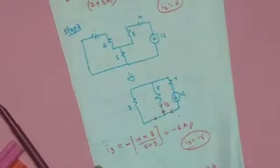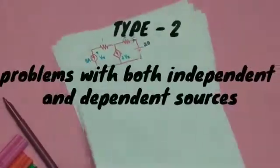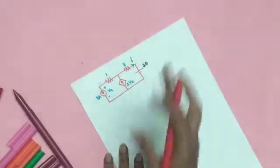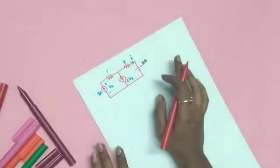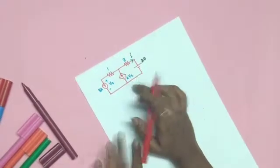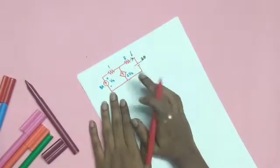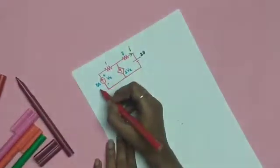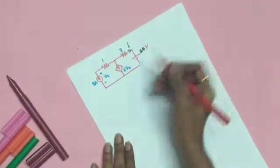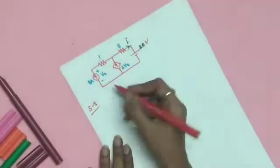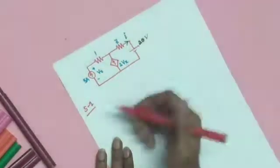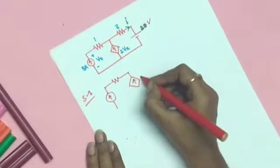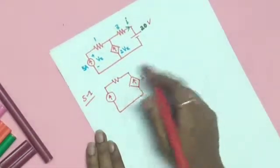Now comes Type 2 problems in superposition theorem — circuits with a dependent source. If you have a dependent source, you should not de-energize it. You only de-energize independent sources, just as before. The dependent source remains untouched throughout all sub-circuits.